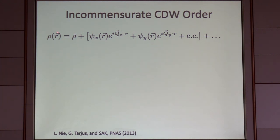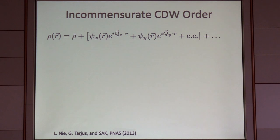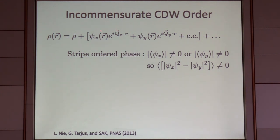Now I'm looking at an incommensurate charge density wave in some tetragonal system, which can oscillate with ordering wave vector qx — some wave vector in the x direction — or qy, some ordering vector rotated by 90 degrees, imagining a symmetry between those. There's a symmetry under exchanging x and y — that's C4 rotation symmetry — a symmetry under multiplying psi-x by a phase — that's translating the system in the x direction — and multiplying psi-y by a phase — translating in the y direction.